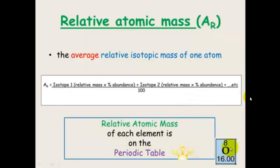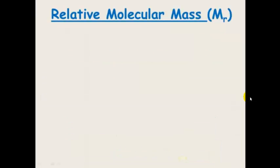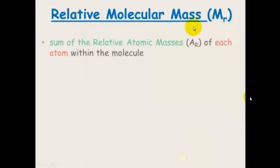If you have a look at the periodic table, the relative atomic mass is going to be equivalent to the mass number. So the relative atomic mass of each atom is equal to the mass number on the periodic table. Relative molecular mass is simply the addition or the sum of the relative atomic masses of each atom in that molecule.